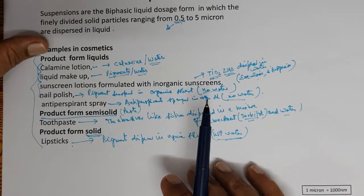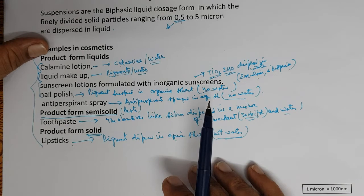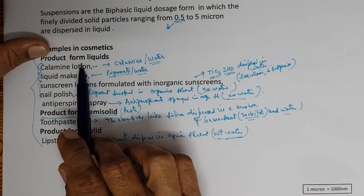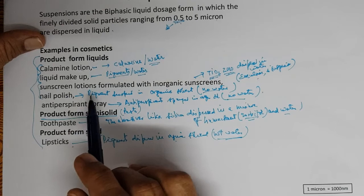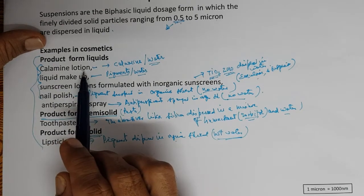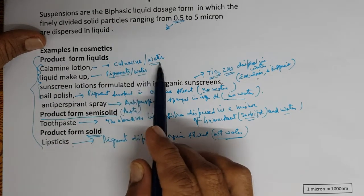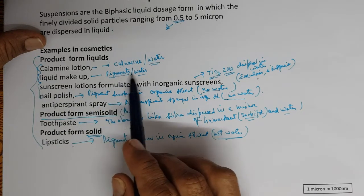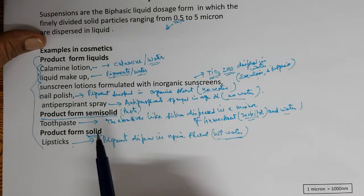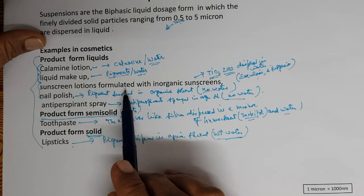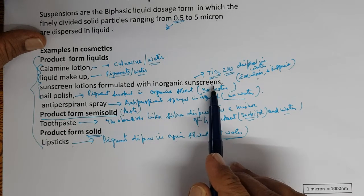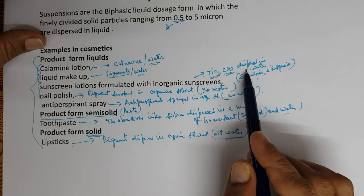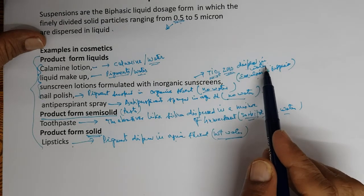Examples in cosmetics — product forms that are liquids: calamine lotion, where calamine is dispersed in water; liquid makeup, where pigments are dispersed in water; sunscreen lotions formulated with inorganic sunscreens, titanium dioxide and zinc oxide dispersed in water.